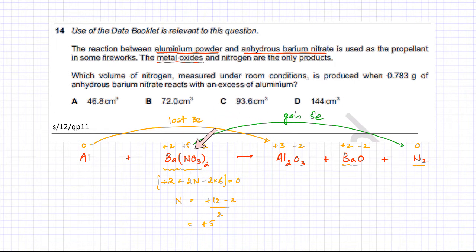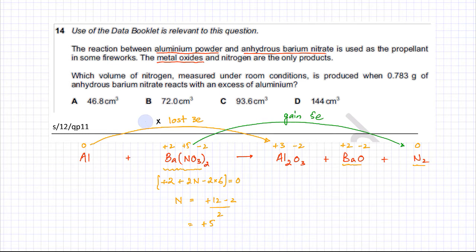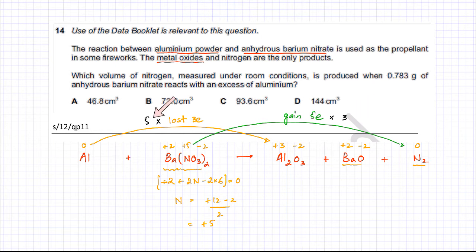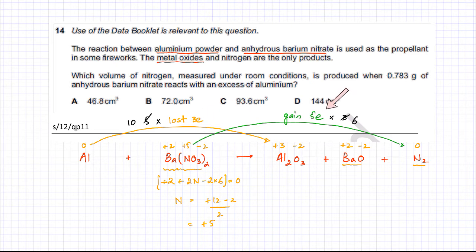Aluminium is losing 3 electrons and nitrogen is gaining 5 electrons. The number of electrons lost and gained must be equal. To make them equal: if I have 5 aluminiums, they would in total lose 15 electrons. If I have 3 nitrogens, they would in total gain 15 electrons. So the ratio of aluminium to nitrogen should be 5:3. Or equivalently, for every 10 aluminiums there should be 6 nitrogens — 10 aluminiums lose 30 electrons, 6 nitrogens gain 30 electrons.